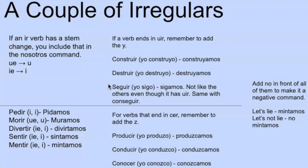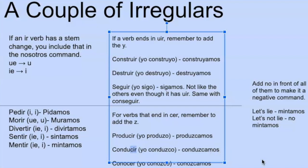Another thing: 'construir' — the -uir ending makes a Y appear. So 'yo construyo' — take away the o, add -amos — 'construyamos.' Same for 'destruir' and 'huir' — to run away. Note that 'seguir' is a -uir verb but doesn't follow this pattern: 'yo sigo,' so it's just 'sigamos.' Same with 'conseguir.' For -cer verbs, you add a Z, like the Y. So 'producir': 'yo produzco' — 'produzcamos.' 'Conducir': 'yo conduzco' — 'conduzcamos.' Same with 'conocer' — 'conozcamos.'